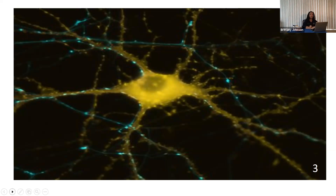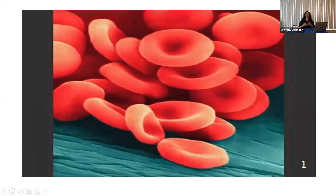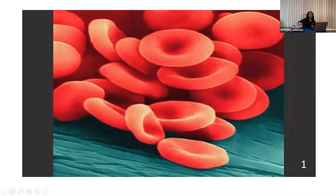By the process of elimination, we already know that only one cell is left. But let's see if the function matches. Which image contains cells that transport oxygen to the body and carbon dioxide from the body? If you guessed number one, you would be correct. This is an example of a red blood cell, and thanks to hemoglobin, it's able to transport oxygen to different parts of our bodies. It has a very interesting shape — a biconcave shape — which means it has a dip in the surface to increase the surface area for gas exchange.